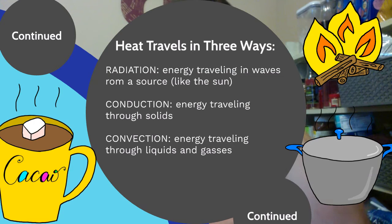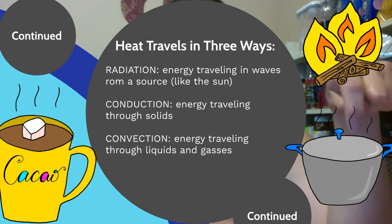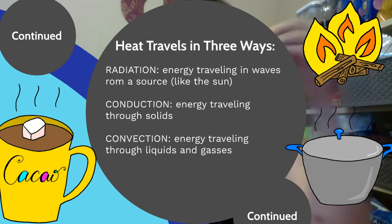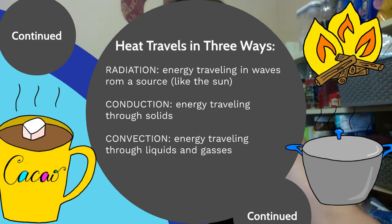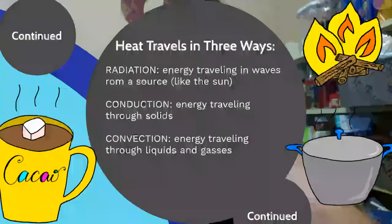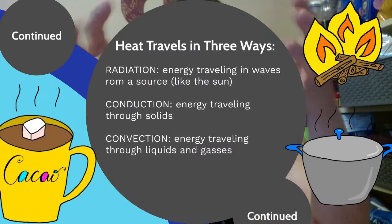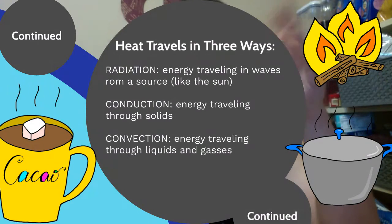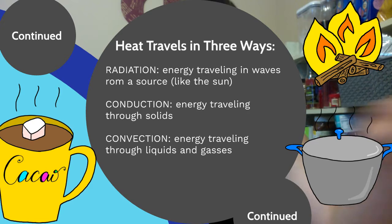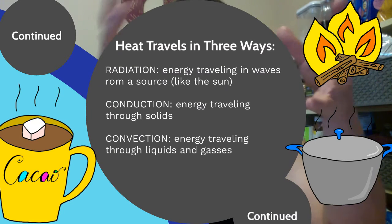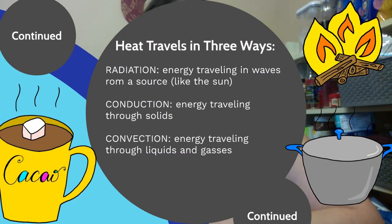Conduction is when heat is traveling through solids. For example, if you're heating a pot on the stove, you might have noticed that if you touch the outside, it's really, really hot. That's because heat is traveling from the boiling water and from the stove underneath to the metal part, conducting throughout the whole thing. When you put a metal pot on top of your stove, it's not just the bottom that gets really hot — it's the whole thing. And that's because of conduction.